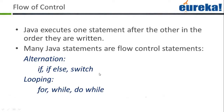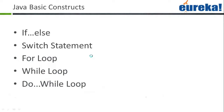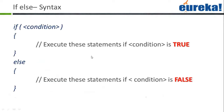Java executes one statement after the other in sequential order. Many Java statements are flow control statements — like if a particular condition happens, you can execute one block, and if not, you can execute another. These include if conditions, if-else, and switch cases. Let's take them one by one.